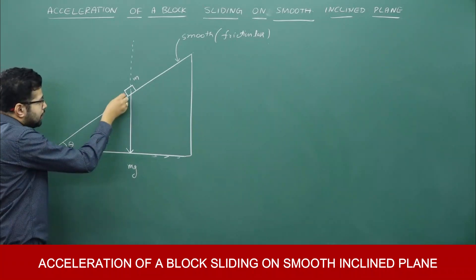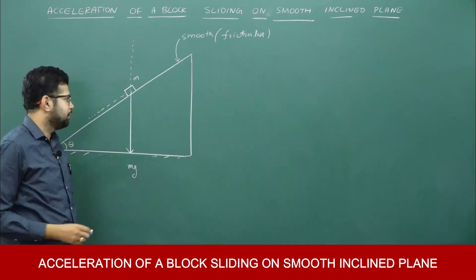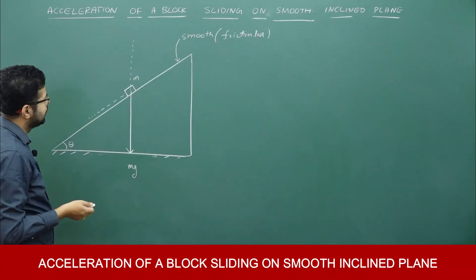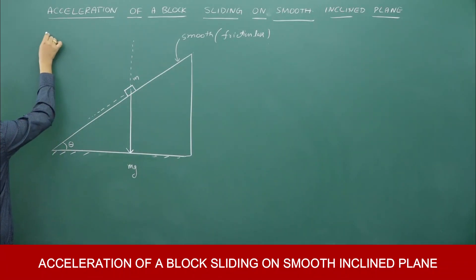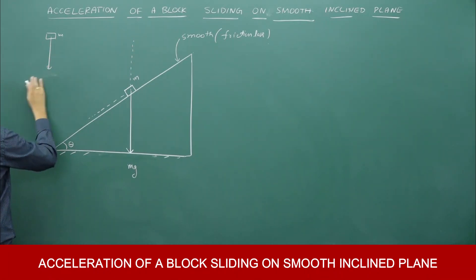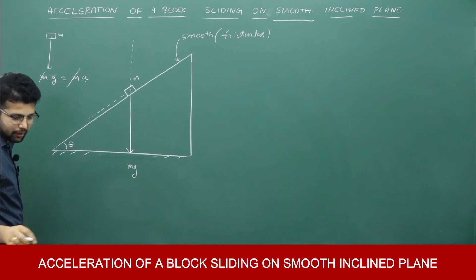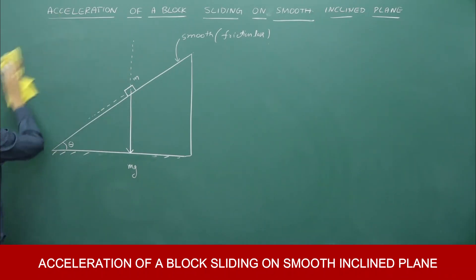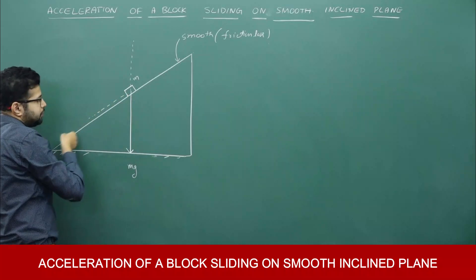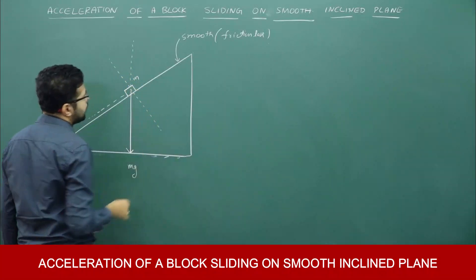To calculate the acceleration along the inclined plane, we have to calculate what is the force along the inclined plane. This mg is not acting along the inclined plane. If a mass is falling freely, then mg itself is responsible for acceleration of the mass, and acceleration would equal g. But entire mg is not acting along the inclined plane, so we have to find the component of mg along the inclined plane and perpendicular to the inclined plane.